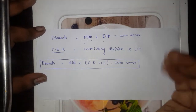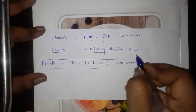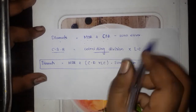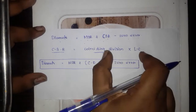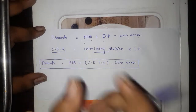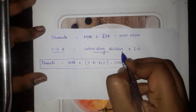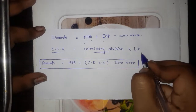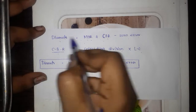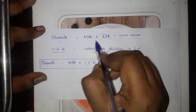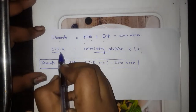The Circular Scale Reading can be calculated as: CSR = coinciding division × Least Count. So the full formula becomes: Diameter = Main Scale Reading + Circular Scale Reading − Zero Error.